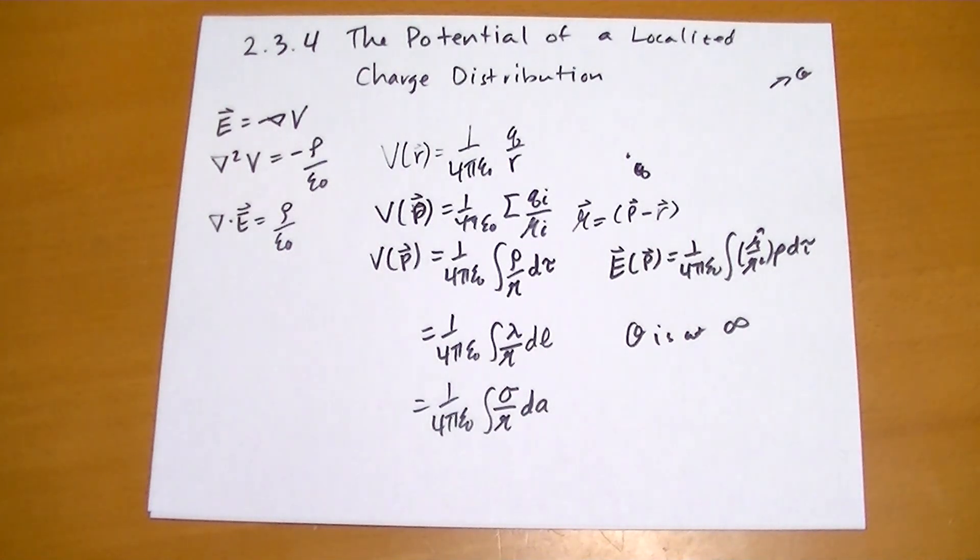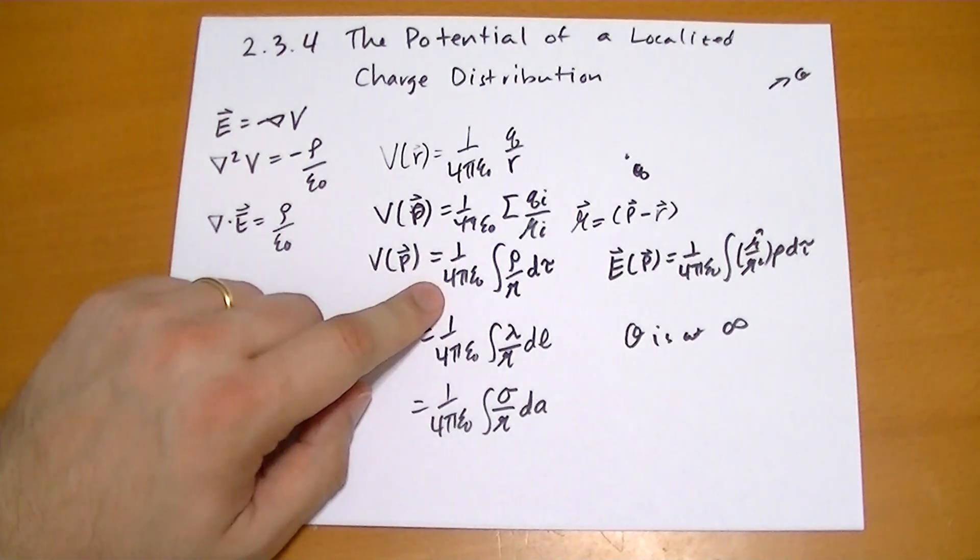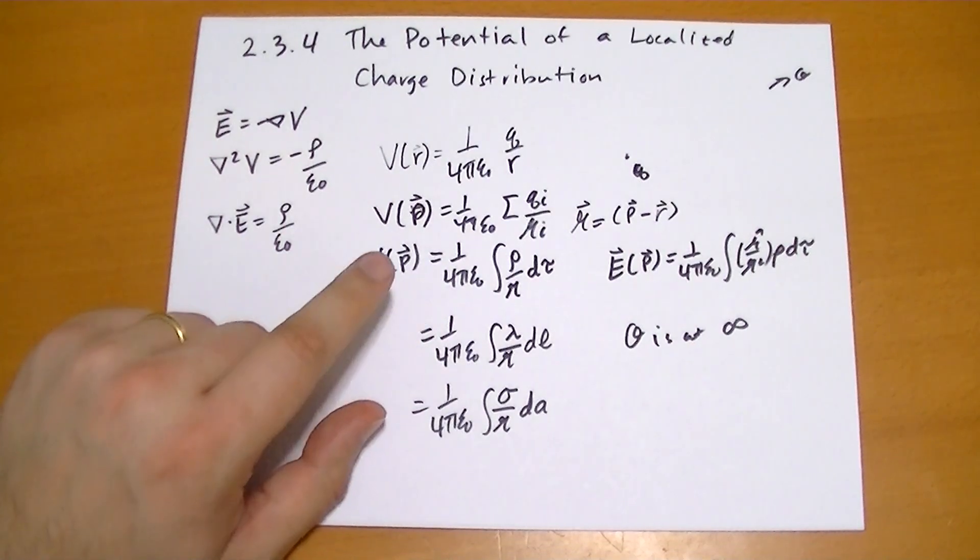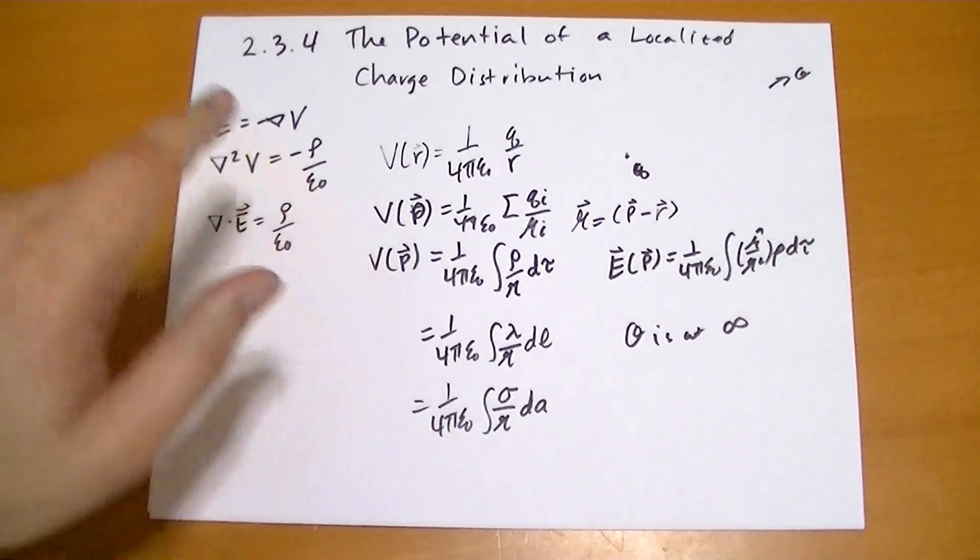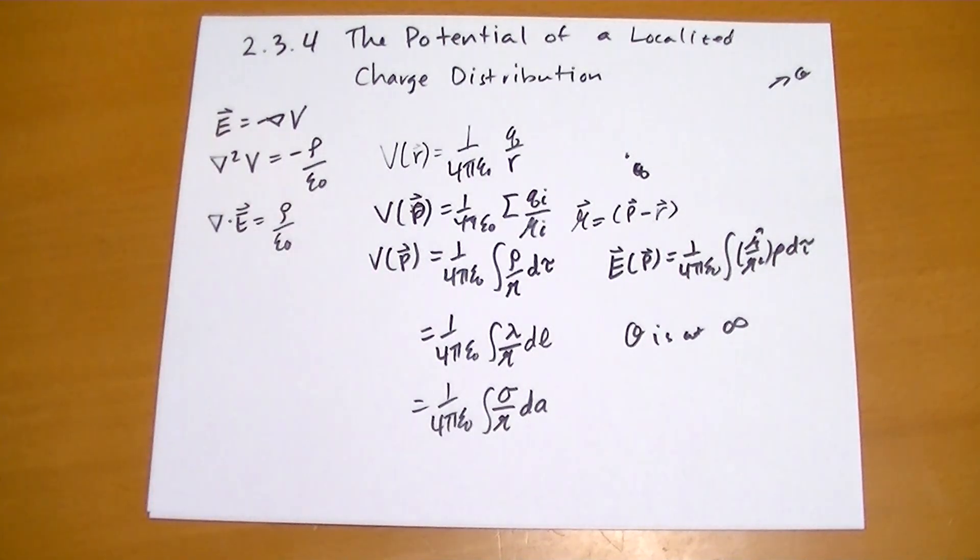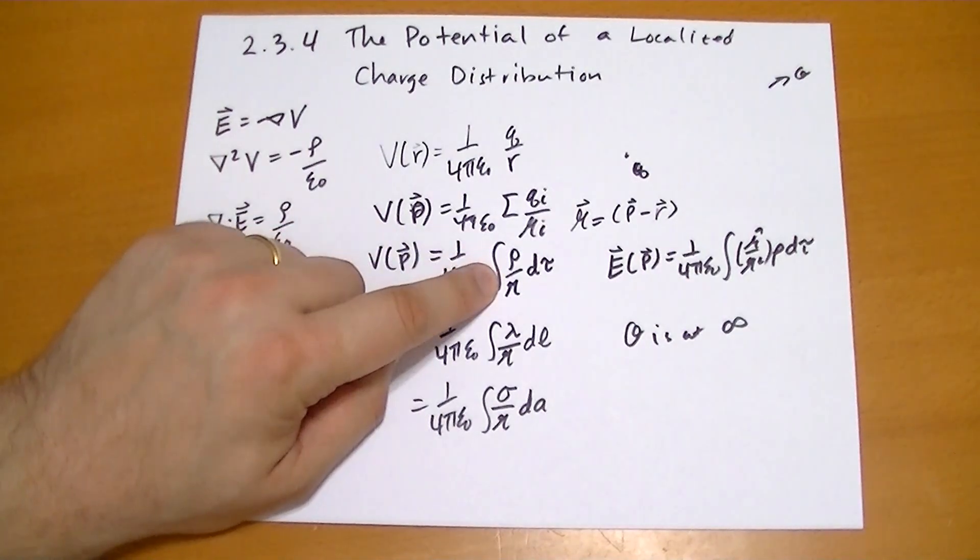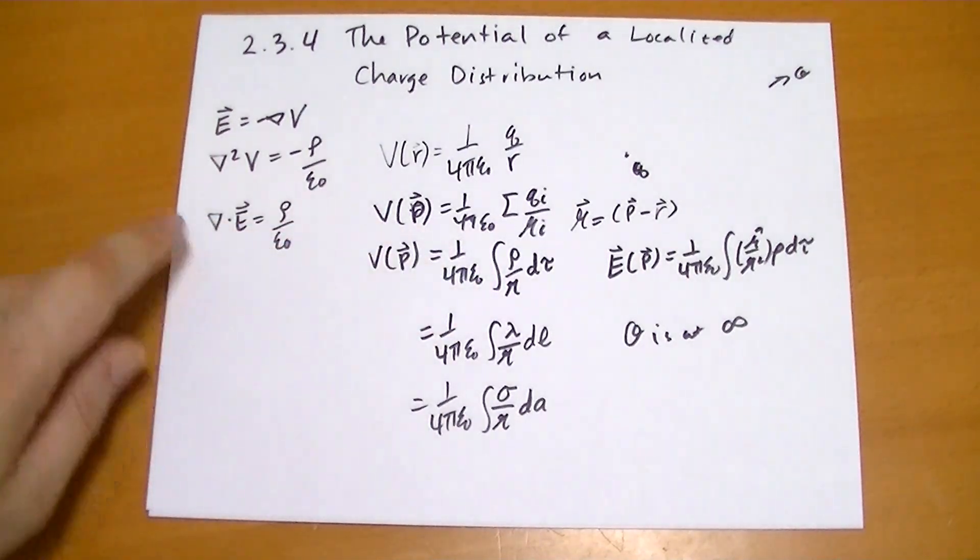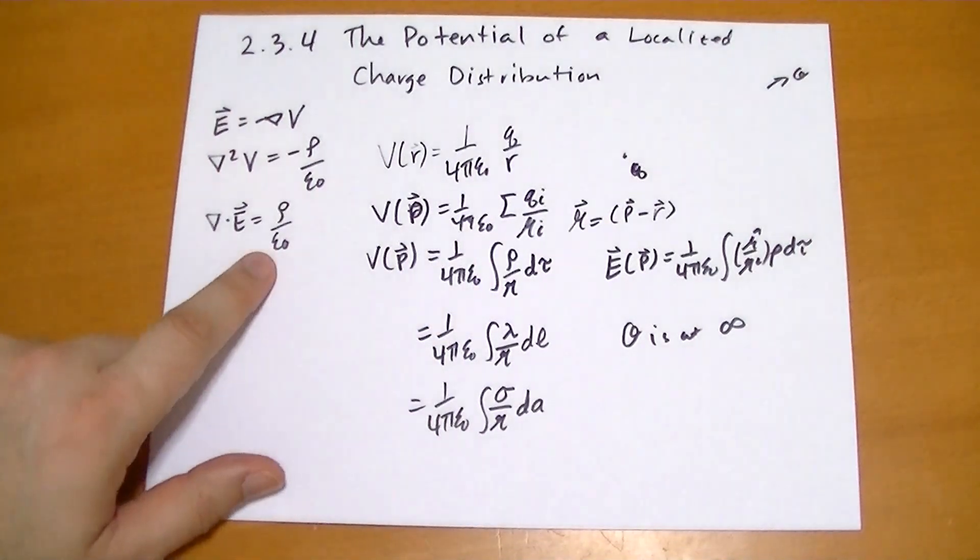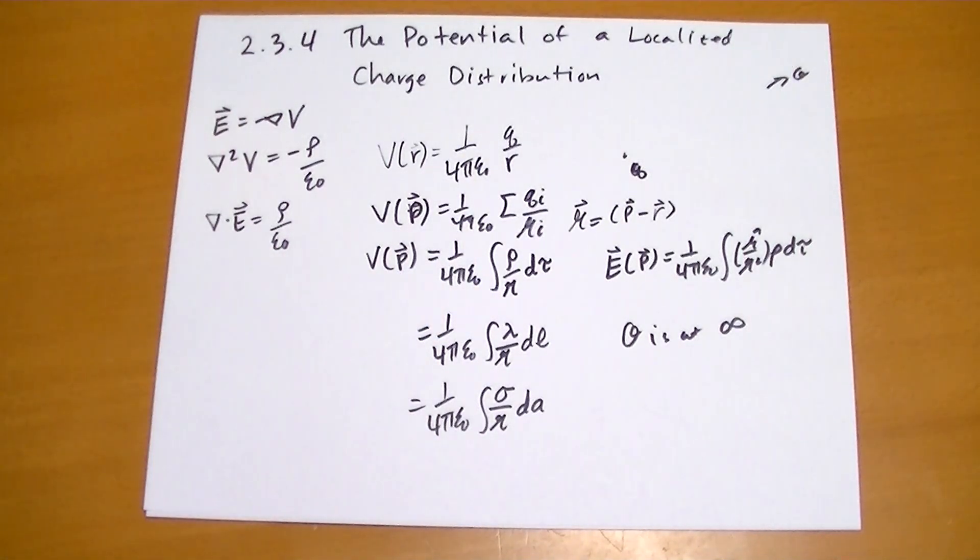The second interesting thing about this is if you remember back in chapter 1, I talked about the Helmholtz theorem. This is that equation from the Helmholtz theorem that will give you the potential that will describe the vector field, where rho over R is actually the divergence. Well, rho actually is the divergence of that field that you're given.